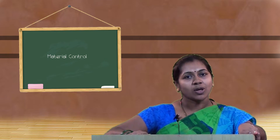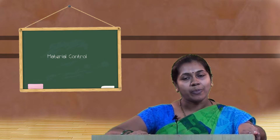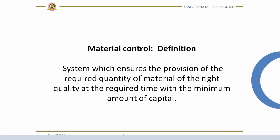First, let's look into the definition of material control. Material control is a system which ensures the provision of the required quantity of material of the right quality at the right time with the minimum amount of capital. It is concerned with control over purchasing, storing, and consumption of material so as to maintain a regular and timely supply of material while avoiding over-stocking.